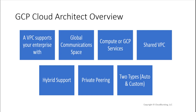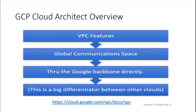A VPC supports your enterprise by providing a global communication space, allowing you to use compute and other services in a protected environment on a worldwide scale. You can also share your VPC — connecting two VPCs through what's called a Shared VPC. There's also hybrid support with private peering. VPCs come in two types: auto mode and custom mode.